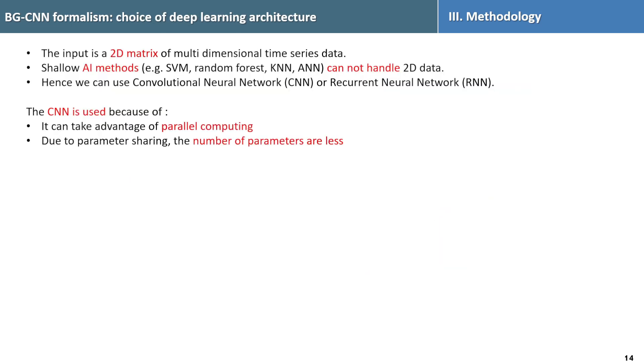Now comes another big question that what AI model should we choose? Traditional methods such as support vector machines, random forest, k-nearest neighbor face limitation when handling two-dimensional data while preserving temporal dependency. As a result, our focus narrows down to either using CNN or RNN.